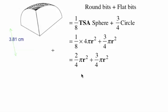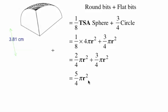Two quarters plus three quarters equals five quarters. Which is one and a quarter, by the way. So we have five quarters pi r squared — one quarter more than a full circle. And that's it: five quarters pi r squared.